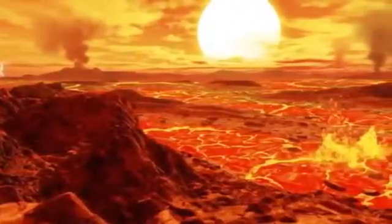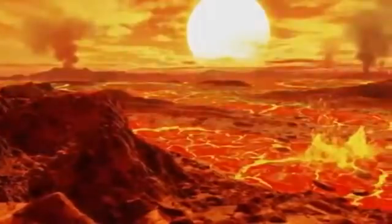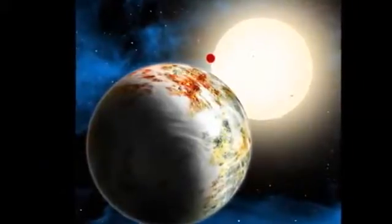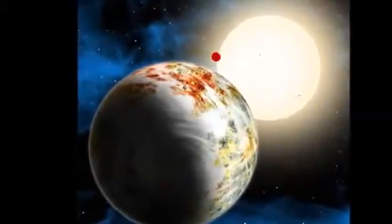refers to the planet as the Godzilla of Earths. NASA says that Kepler-10c orbits a sun-like star every 45 days, making it far too hot to sustain life as we know it.